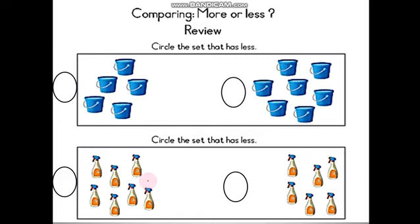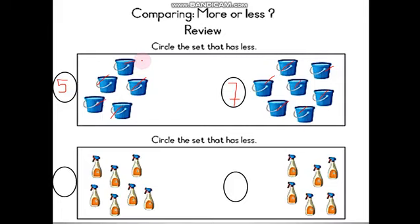Now we have to circle the set that has less. Let's count the pockets: one, two, three, four, five. So we write five on the left. Then I start counting: one, two, three, four, five, six, seven. And I write seven on the right. Who is less — number five or number seven? Excellent! Number five is less than number seven. So I go and circle five.